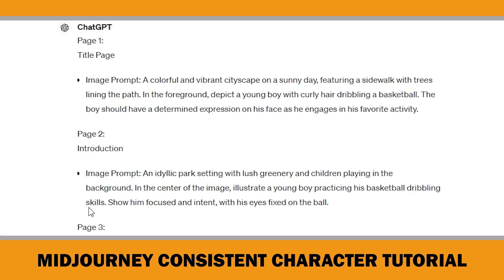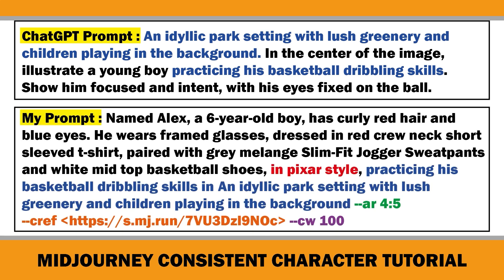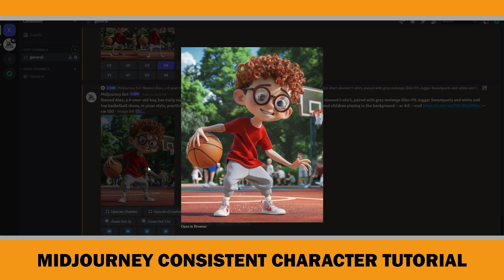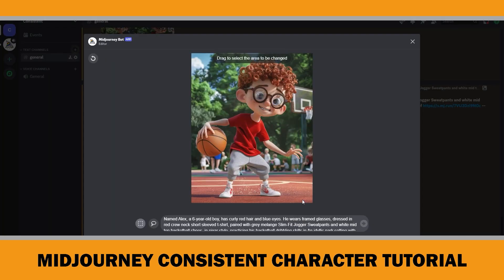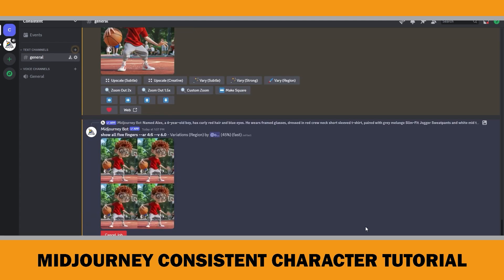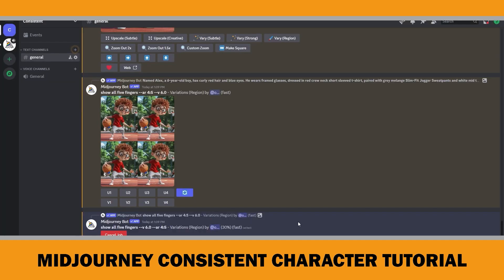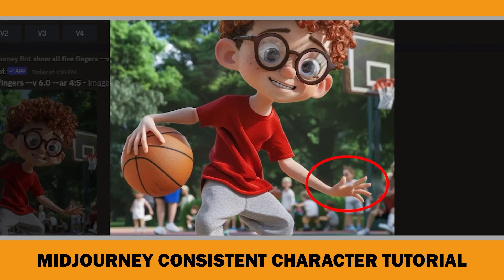Then I attempted the second image prompt that ChatGPT had provided for the second page. I incorporated some elements from ChatGPT's prompt, included my original prompt, and added the CREF and CW parameters. I liked the fourth image and upscaled it. It was nearly perfect — the only issue was the number of fingers. Again, I used the Vary Region editor and selected the finger areas in the image, then wrote 'show all fingers' and submitted the changes. The first attempt wasn't ideal, so I regenerated the same prompt. This time, the first image looked better with five fingers, and I upscaled it.